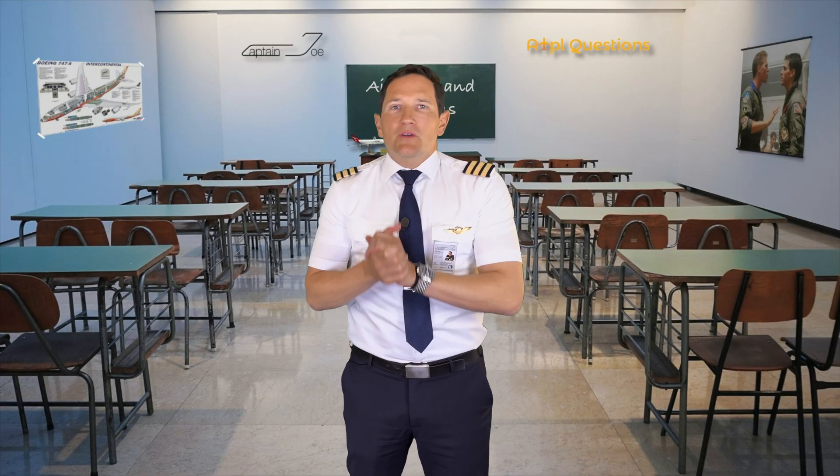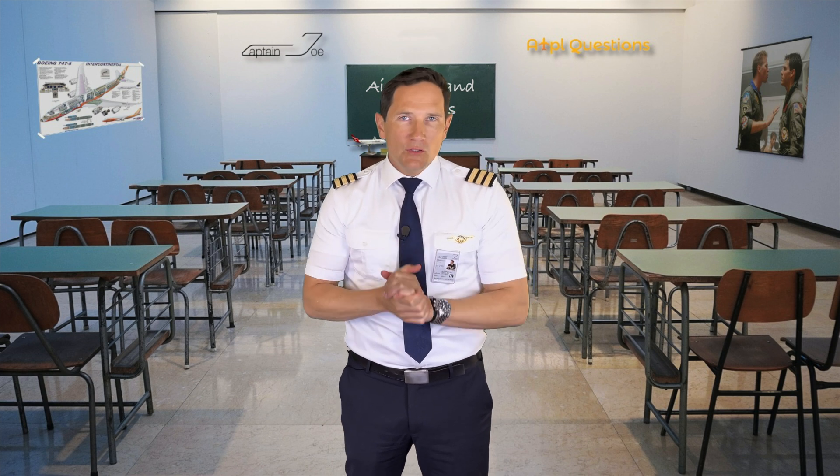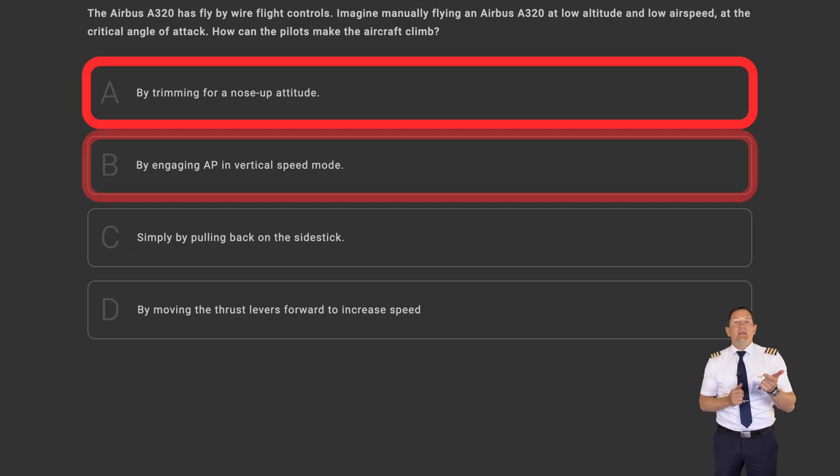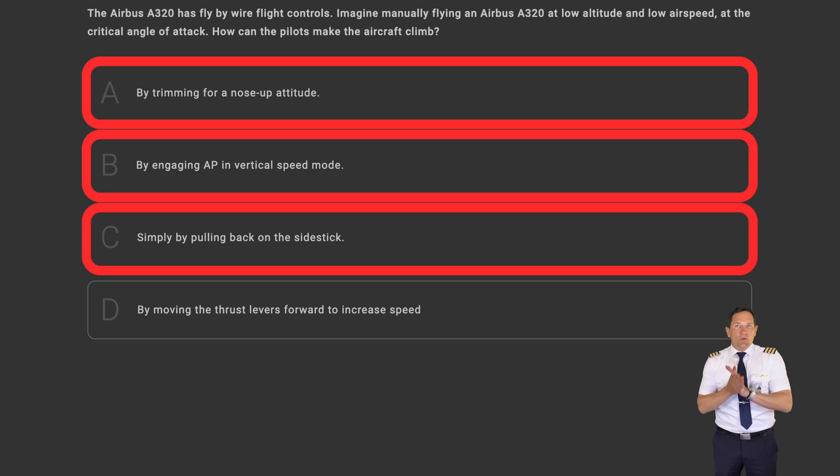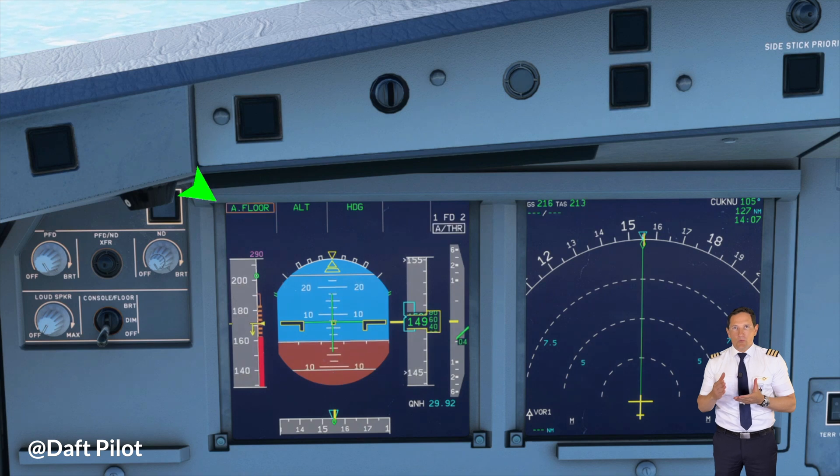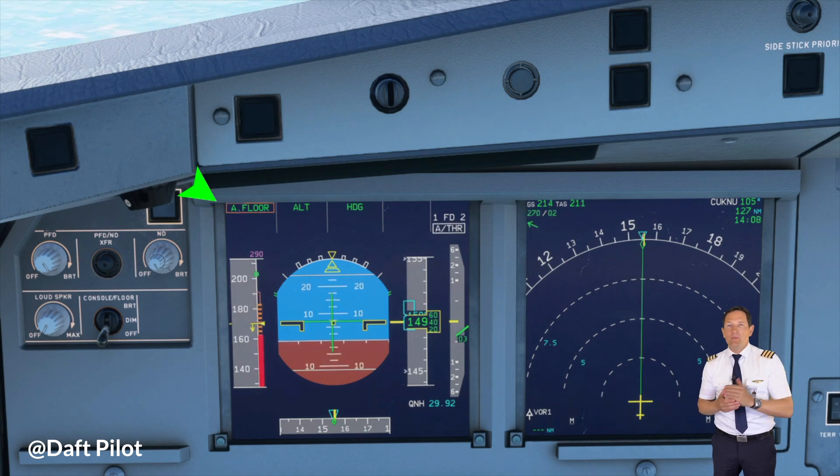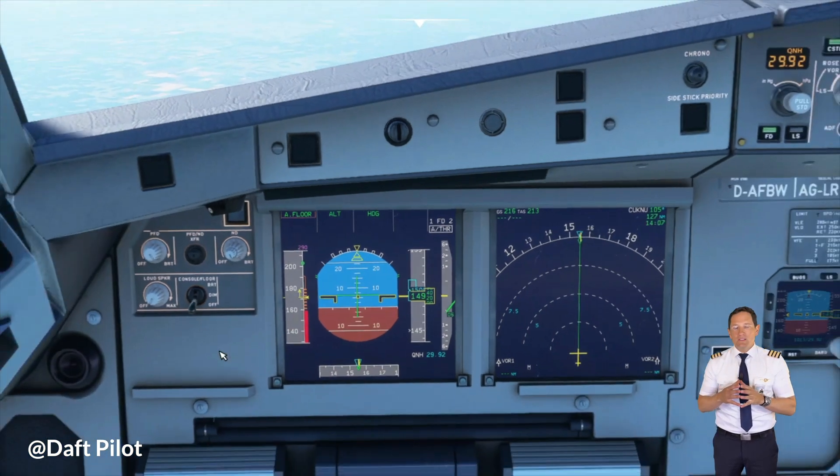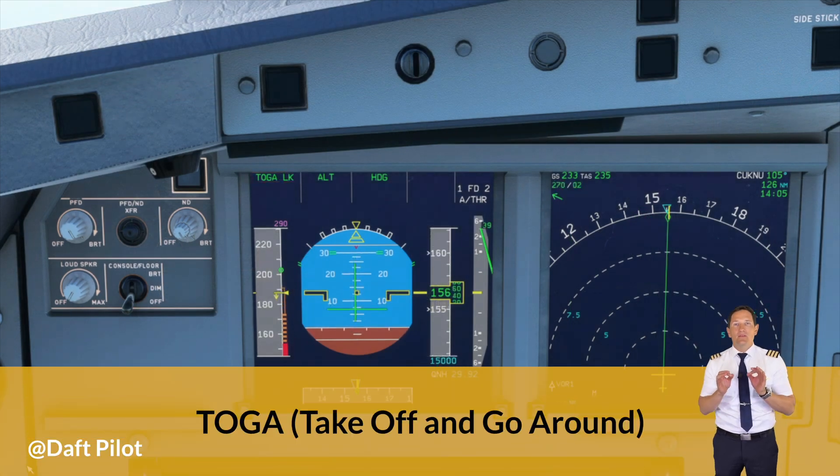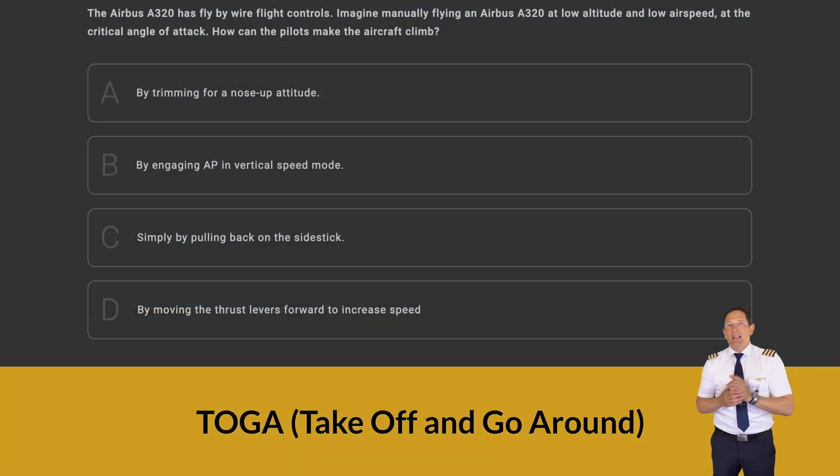Super tricky question and in my opinion, too much to ask from an ATPL student because you would need to have an Airbus A320 type rating to find the right answer. Now, answers A, B and C will all have a similar outcome which is causing an activation of the alpha floor protection as the maximum angle of attack is reached, causing the thrust setting to go into TOGA mode regardless of the thrust lever position.